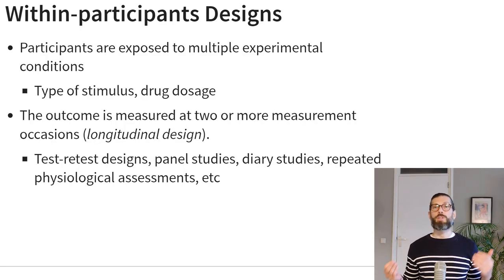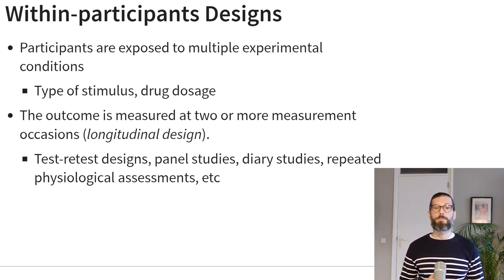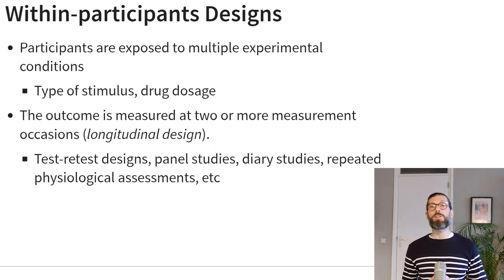For example, your group of participants might view several distinct stimuli or try several different drugs — they might first be on a placebo and then receive your treatment, or vice versa. Each time they receive a different treatment, you measure the same outcome of interest. So you have one dependent variable measured multiple times, which is known as a longitudinal design — a design that unfolds over time.